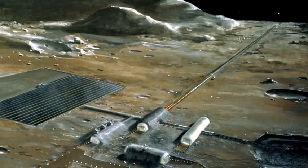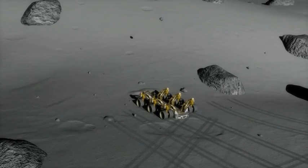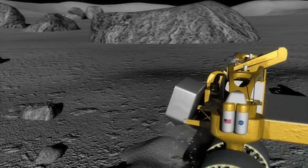We could even bury a habitat and have that shielded from radiation and from micrometeorites and have a more stable thermal environment. So there are a lot of benefits to using regolith, which is a local material, because all you have to do is bring the machine up and then use the local materials to build whatever asset you need on the moon.